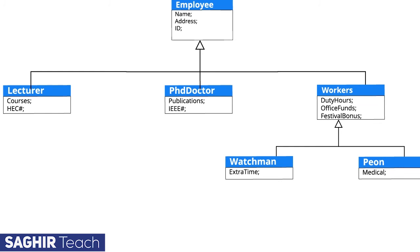All subclasses contain the properties of their superclasses. For example, watchman contains the property of overtime from its watchman class, duty hours, office funds, and festival bonus from its superclass worker, and also the properties of name, ID, and address from its main superclass employee. Employee here is the abstract class, and the abstract class is the main superclass of the entire process.